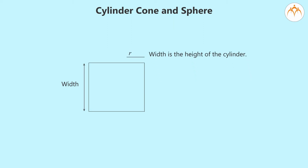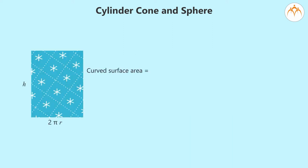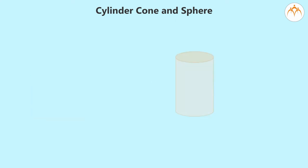So the length of the rectangle is 2πr, where r is the radius of the top or bottom circle. The height is h. So curved surface area equals length into breadth of the rectangle, which equals 2πrh.